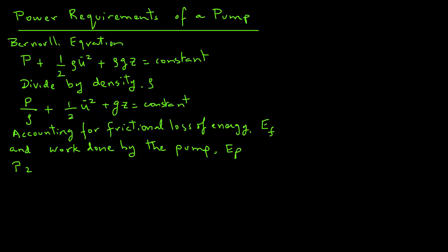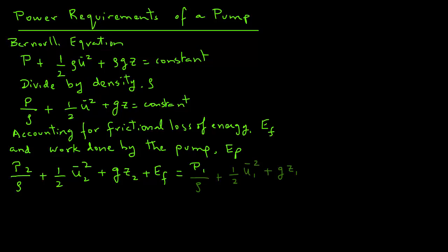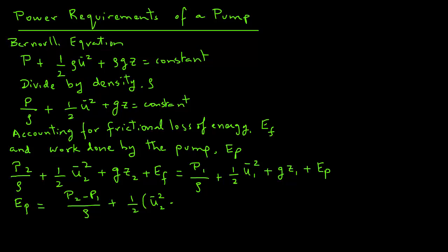The modified Bernoulli equation becomes: P2 over rho plus one-half u2-bar squared plus g z2 plus EF equals P1 over rho plus one-half u1-bar squared plus g z1 plus EP. We can rearrange the terms so that EP equals P2 minus P1 divided by rho, plus one-half times u2 squared minus u1 squared, plus g times z2 minus z1, plus EF.